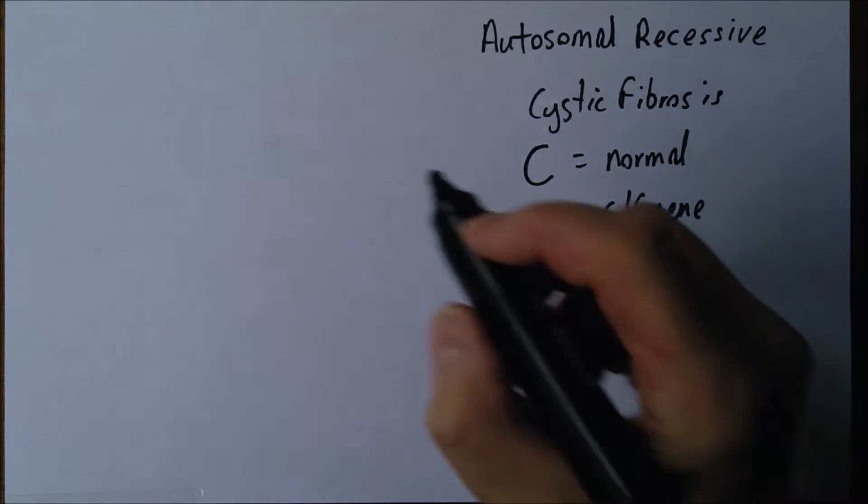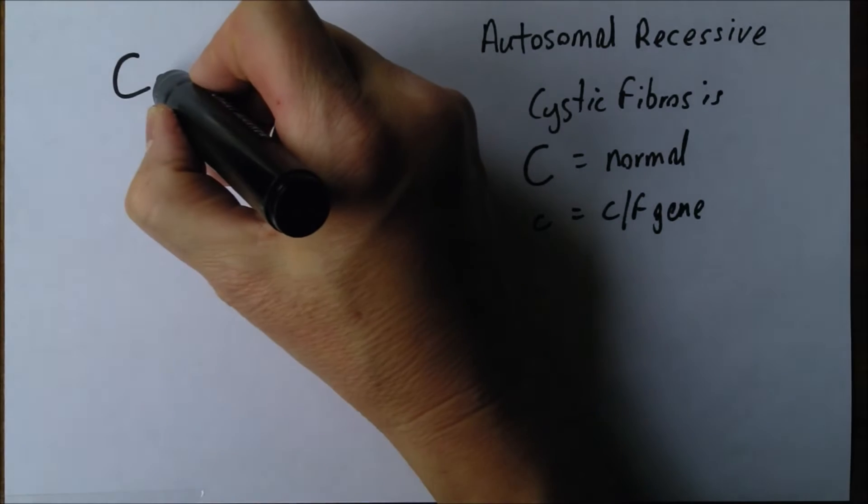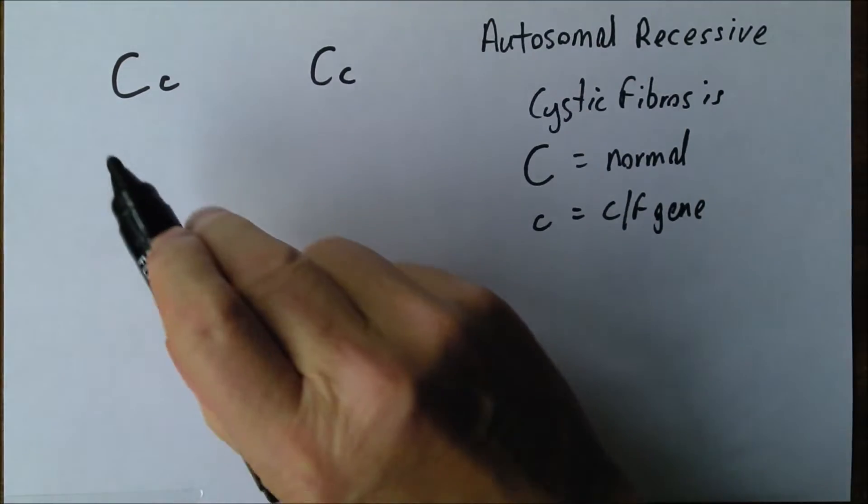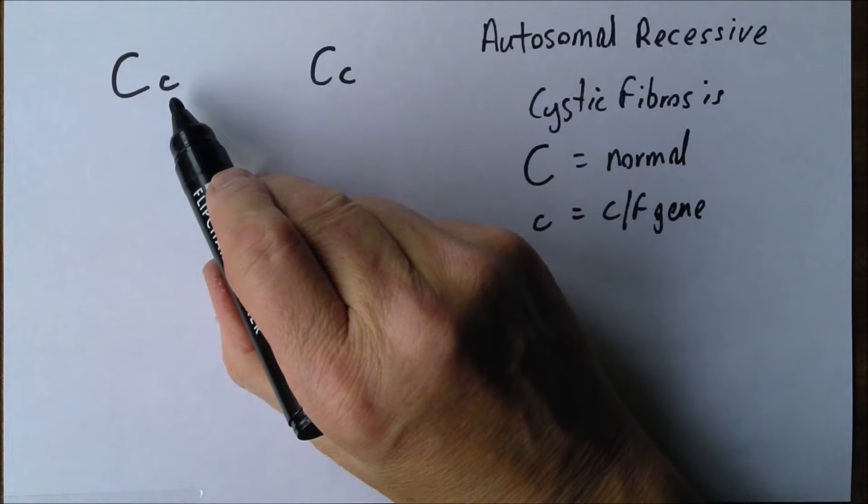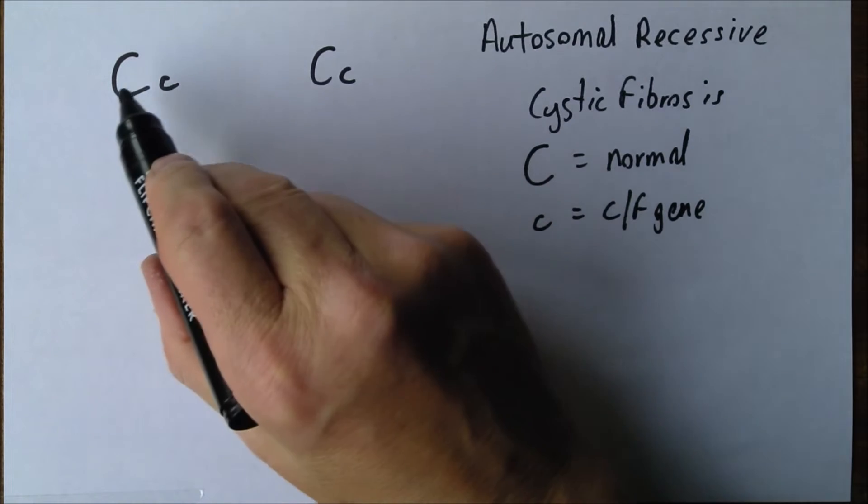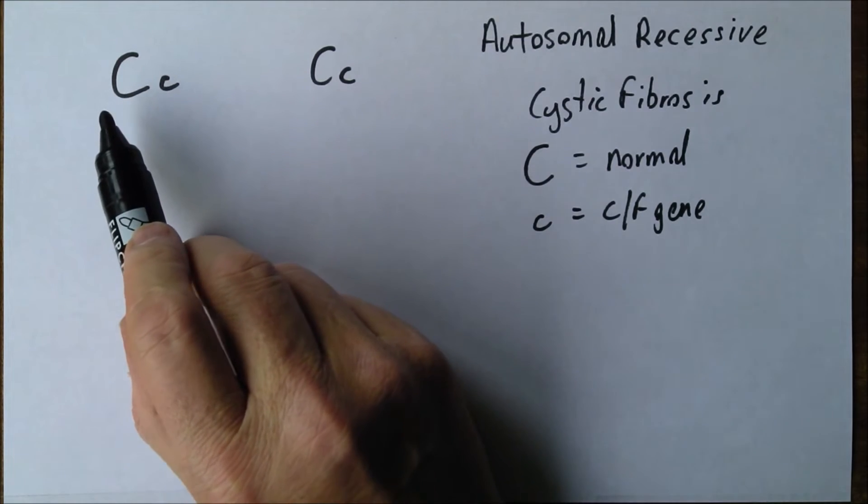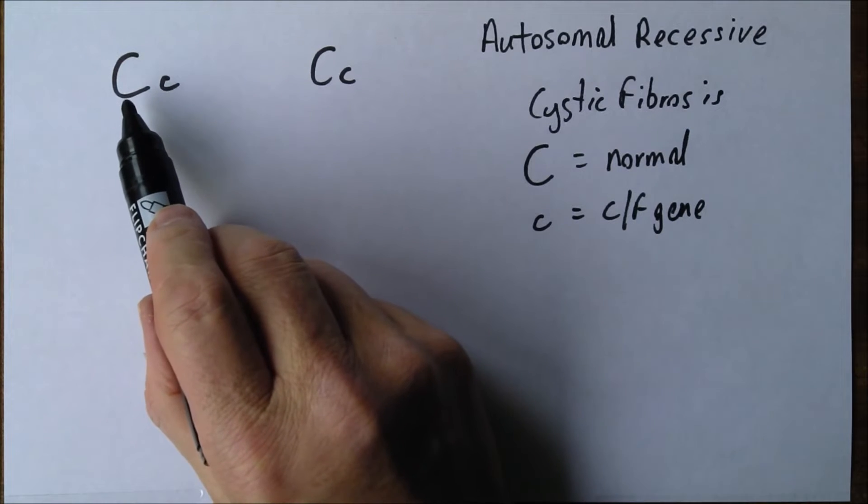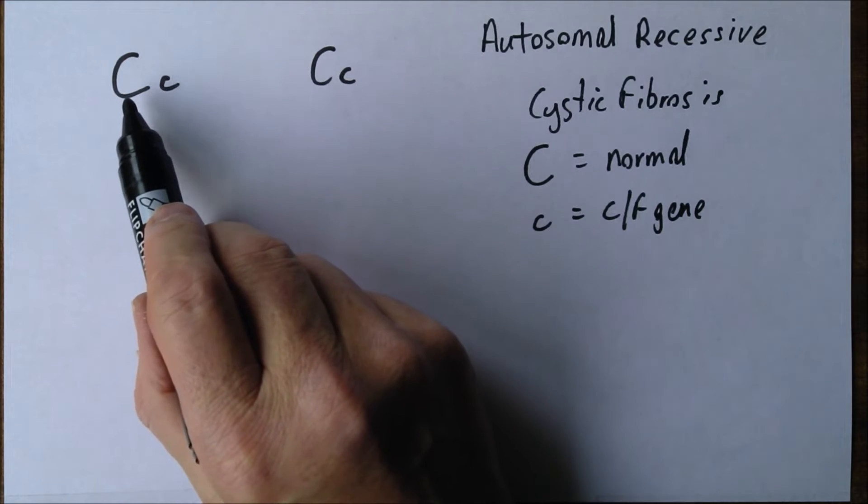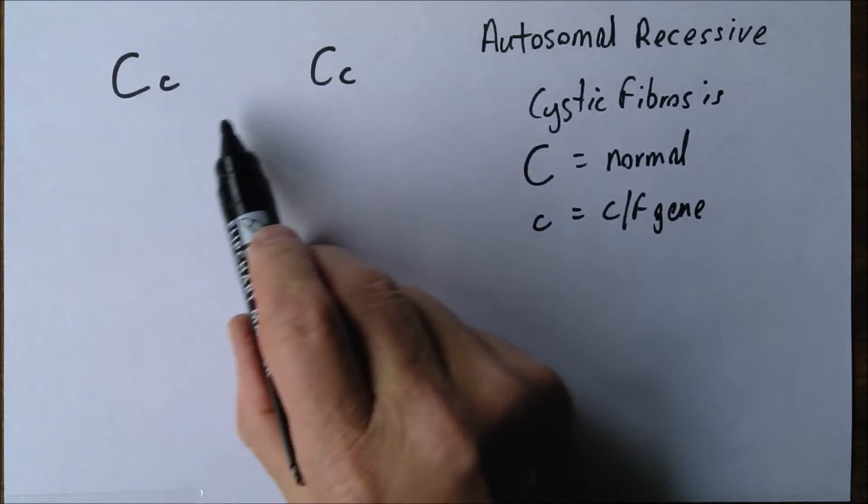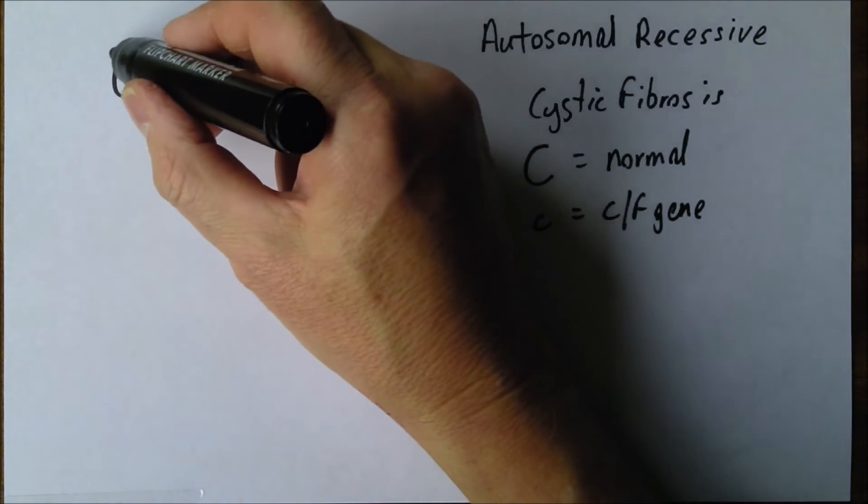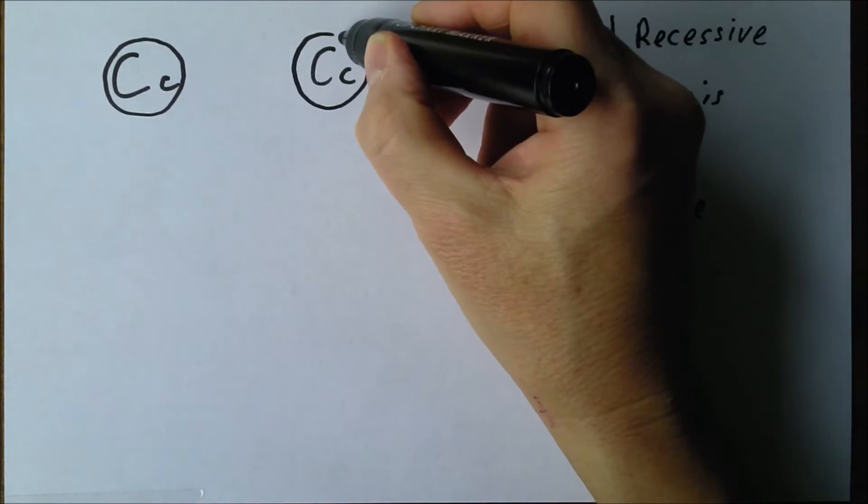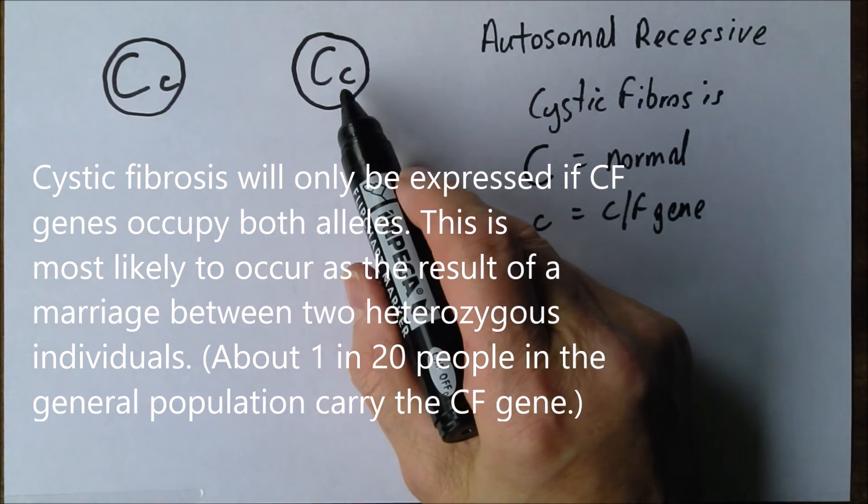Typically we have two parents who are both Cc. Because the cystic fibrosis gene is recessive and the normal gene is dominant, both these parents are phenotypically normal. They may not even know they're carrying the cystic fibrosis gene.